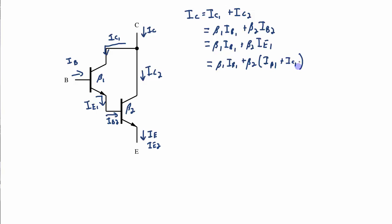And if I expand out IC1 to be beta 1 IB1, I get beta 1 IB1 plus beta 2 times IB1.